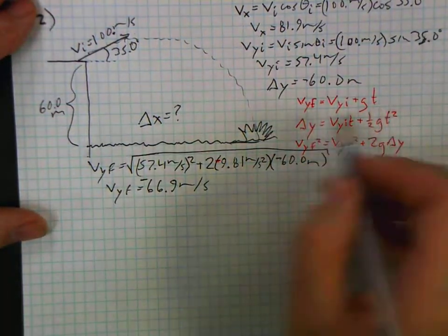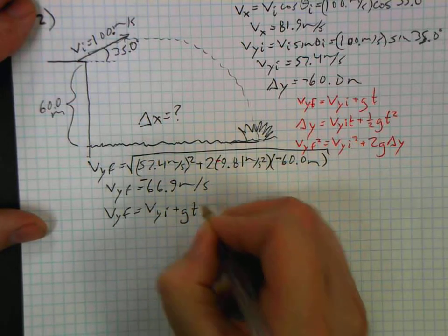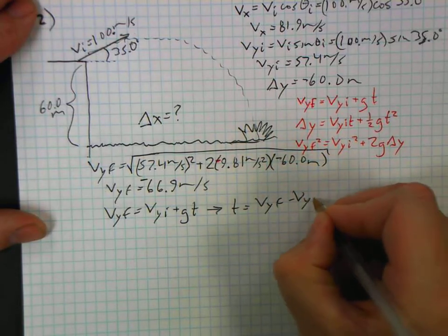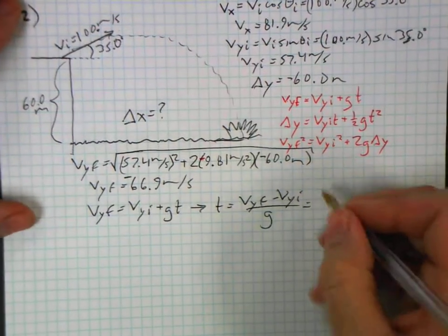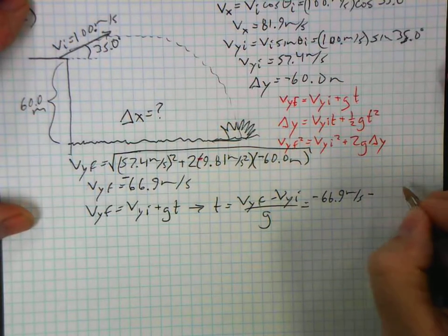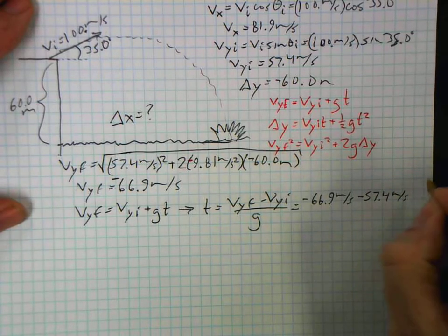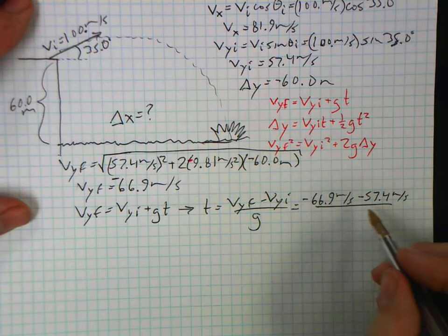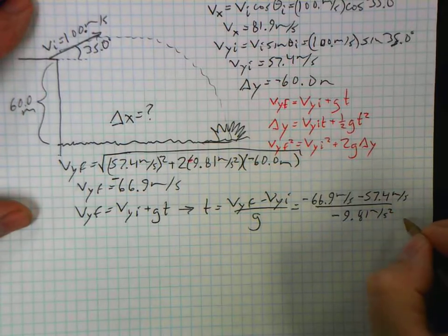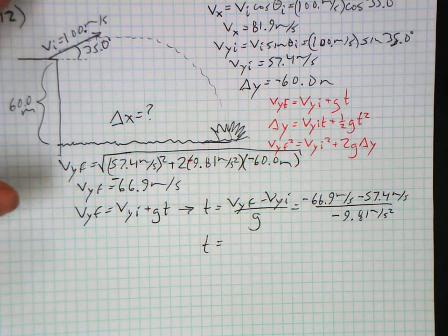Now I can find the time. V y final equals v y initial plus g multiplied by t. Therefore, t is equal to v y final minus v y initial divided by g. V y final is a negative 66.9 meters per second. V y initial that I have to subtract was a positive 57.4 meters per second. Am I still on the screen? Yeah. Divided by g, which is a negative 9.81 meters per second squared, which is good—negative term on top, negative term on the bottom, time will be positive.